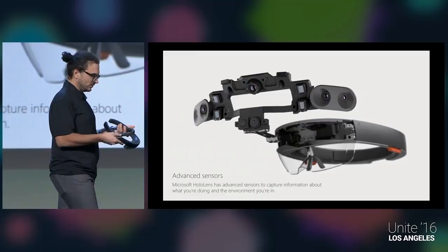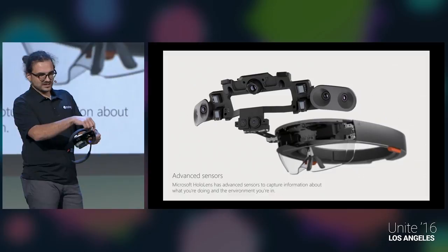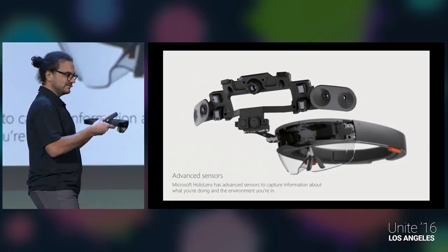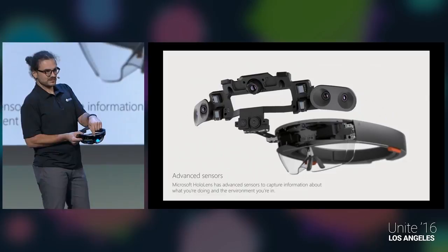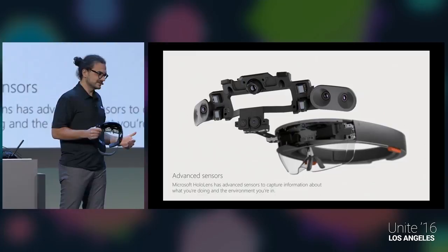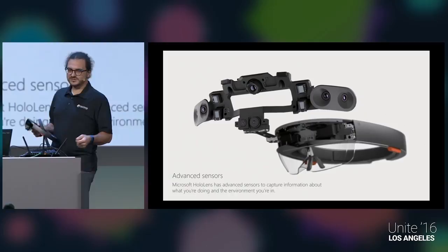The HoloLens has a bunch of sensors. Most importantly, there's the IMU — the inertial measurement unit — which is the rotational sensor. There are also environmental cameras on the left and right sides used to track the device's position in the room, so it knows where it is and keeps holograms stable. There's also a depth camera — an IR camera that measures the distance to objects and reconstructs the room.